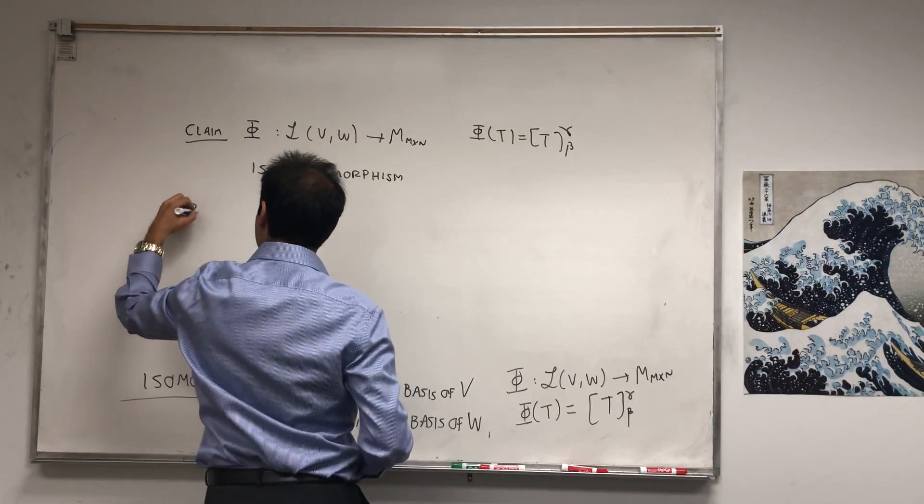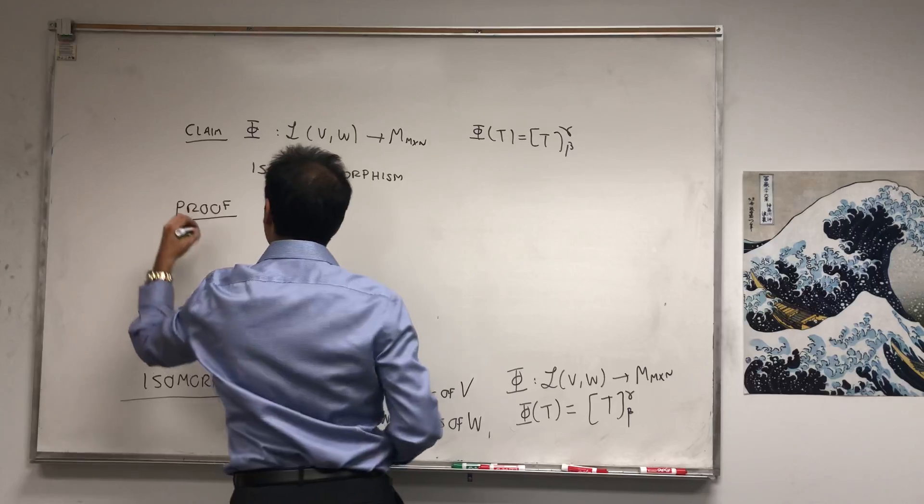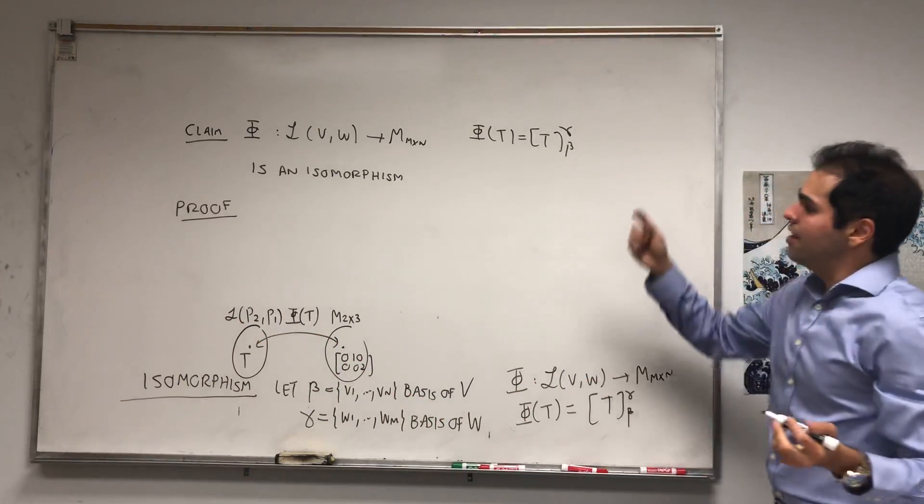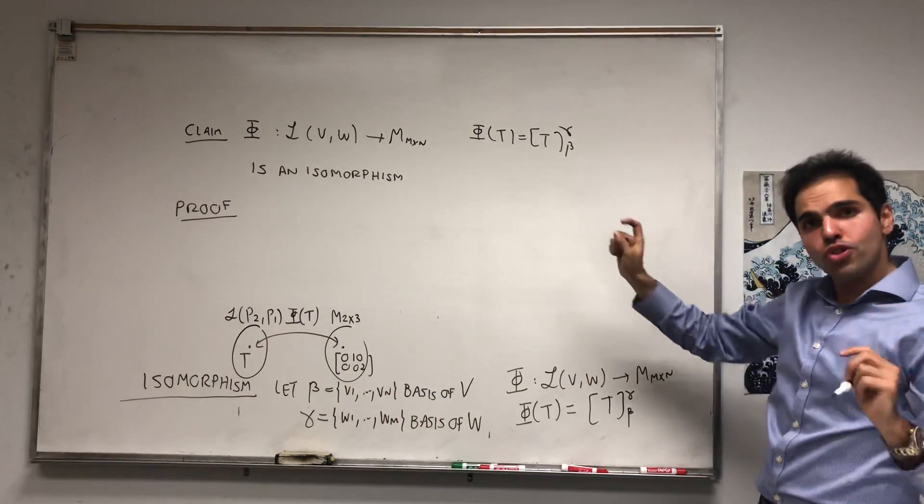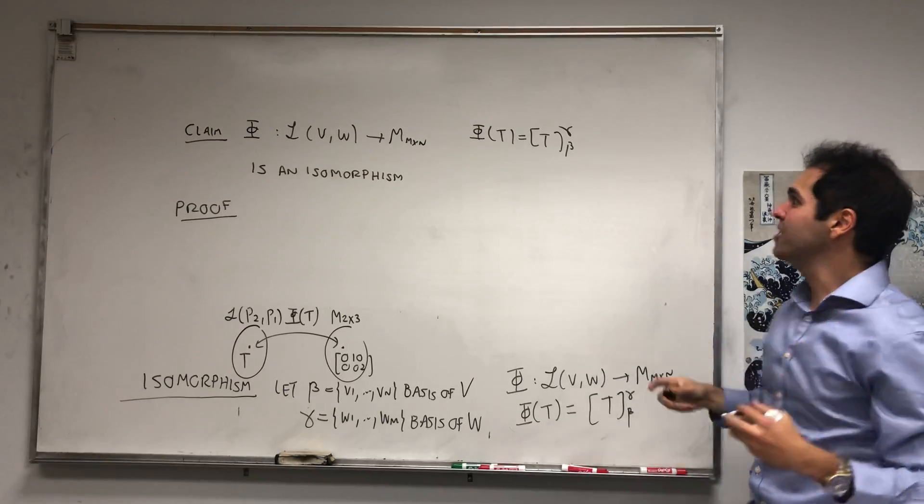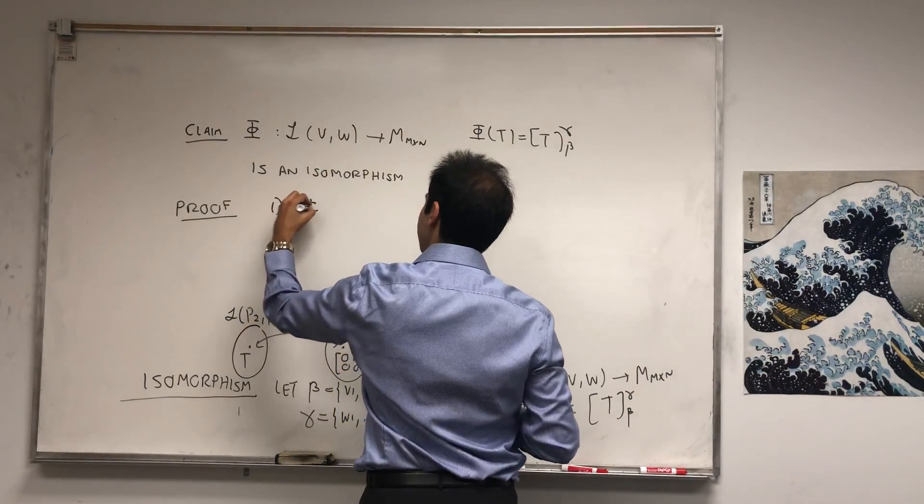And proof. How do you show something is an isomorphism? You show it's linear. You show it's one-to-one, and then you show it's onto. So let's check. Phi is linear.